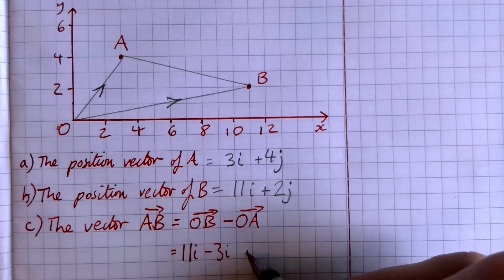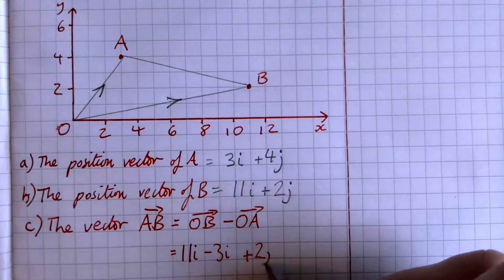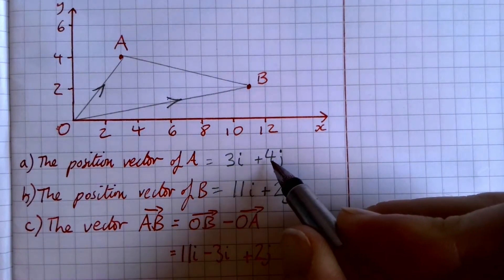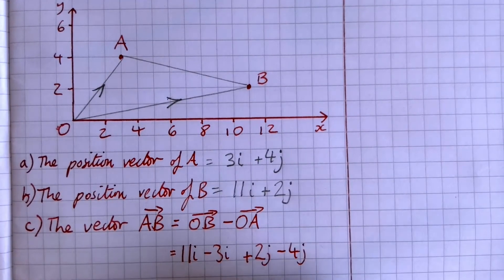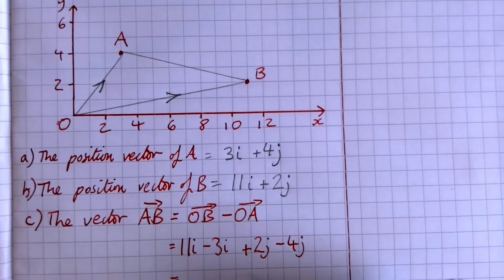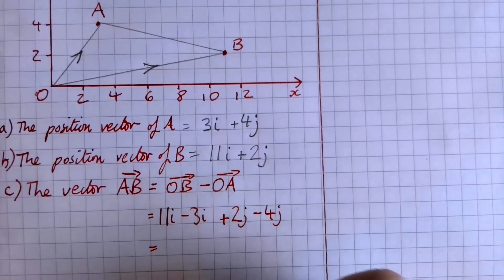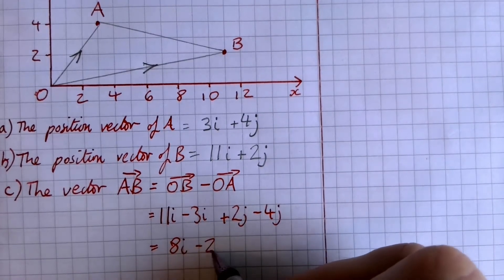And then we're also going to have going from O to B, which is 2j, and we're going to be taking O to A, which is 4j. And that gives us 11 take 3 is 8i, and 2 take 4 is minus 2j.